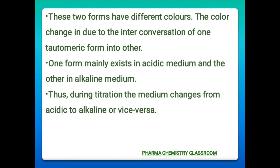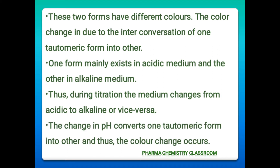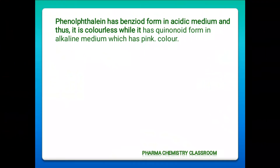In acid-base titration, there will be a change in pH of the content of the conical flask or the analyte after the equivalence point is reached. This change in pH converts one tautomeric form to another, and thus the color change occurs. Let us take phenolphthalein, a weak acidic indicator.